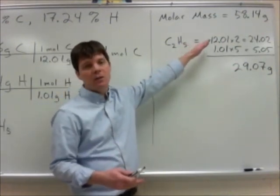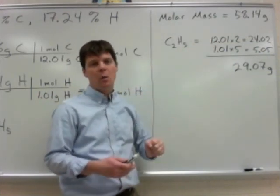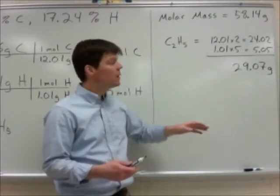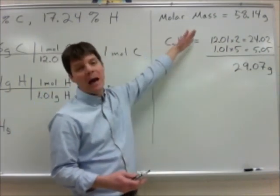So what I would like to do first is to calculate what mass would I have from C2H5. So I'm taking the mass of a carbon, 12.01, multiplying by 2, and the mass of a hydrogen, 1.01, multiplying by 5. So I find that I get a value of 29.07 grams. I can see that this is half of the molar mass.